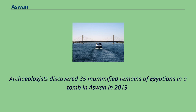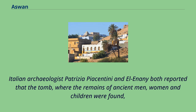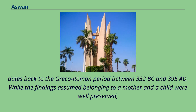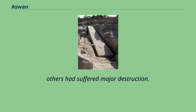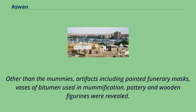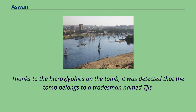Archaeologists discovered 35 mummified remains of Egyptians in a tomb in Aswan in 2019. Italian archaeologist Patrizia Piacentini and Minister el-Enany both reported that the tomb, where remains of ancient men, women, and children were found, dates back to the Greco-Roman period between 332 BC and 395 AD. While findings assumed to belong to a mother and child were well preserved, others had suffered major destruction. Artifacts including painted funerary masks, bases of bitumen used in mummification, pottery, and wooden figurines were revealed. Thanks to hieroglyphics on the tomb, it was detected that it belongs to a tradesman named Cheet.